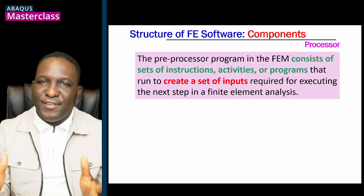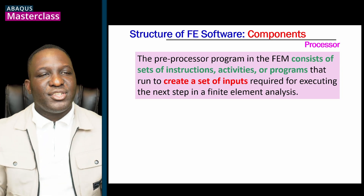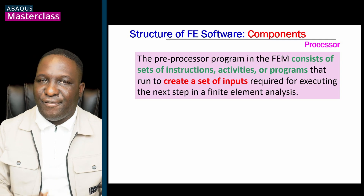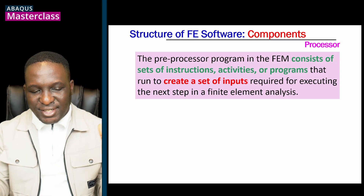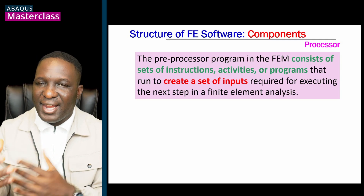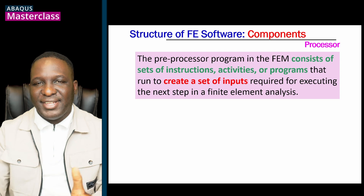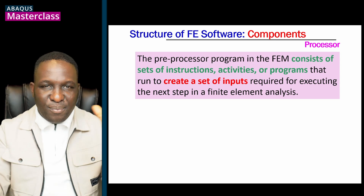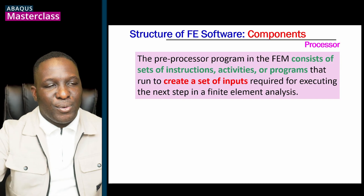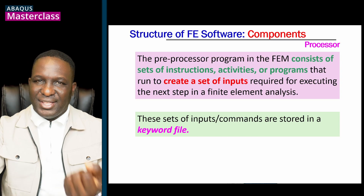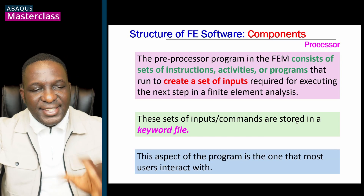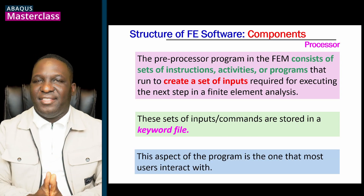The pre-processor program within the FEM scheme consists of sets of instructions or activities that run to create inputs required for executing the next step in the finite element analysis. You could do that manually by coding up what you want, or use a platform like Abacus CAE to pre-process the model. The essence of the pre-processor stage is to create the set of inputs you need to throw into the simulation engine. Within Abacus, this is called a keyword file; other applications have different names for it.